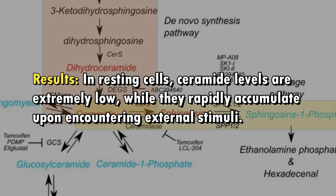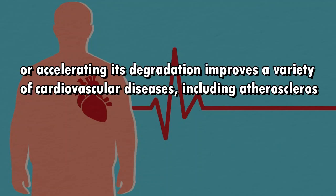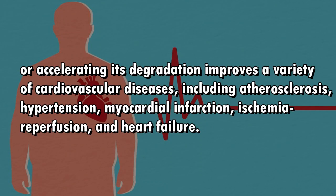Results: In resting cells, ceramide levels are extremely low, while they rapidly accumulate upon encountering external stimuli. Increased ceramide levels are strongly associated with adverse cardiovascular risks and events, while inhibiting the synthesis of ceramide or accelerating its degradation improves a variety of cardiovascular diseases including atherosclerosis, hypertension, myocardial infarction, ischemia reperfusion, and heart failure.